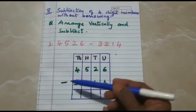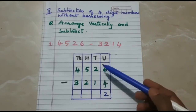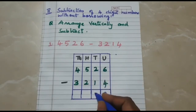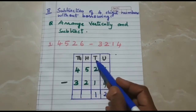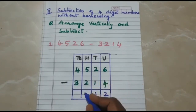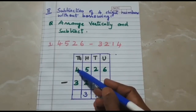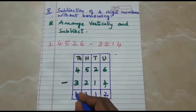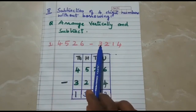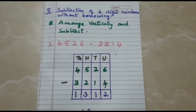Now start the subtraction from units. 6 minus 4 is 2. As we finish with the units, we start with tens: 2 minus 1 is 1. Then we move on to hundreds: 5 minus 2 is 3. Then we start with thousands: 4 minus 3 is 1. So the difference between 4,526 and 3,214 is 1,312.